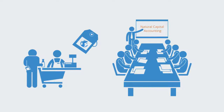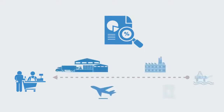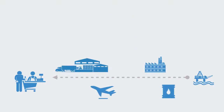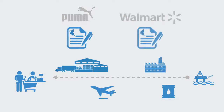This is an inherently complex task that requires businesses to ask difficult questions about their supply chains. Companies like Puma have already achieved this, while larger organizations like Walmart, with tens of thousands of products and suppliers, are gradually moving towards implementing natural capital accounting across their entire supply chain.